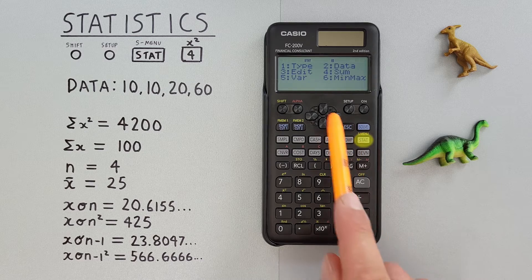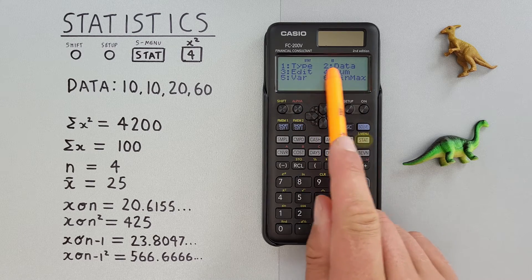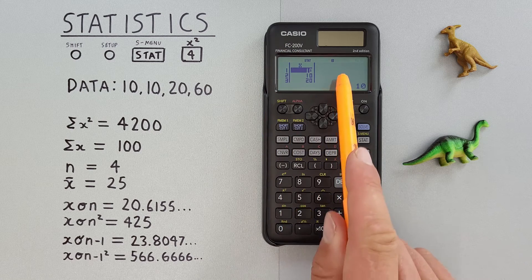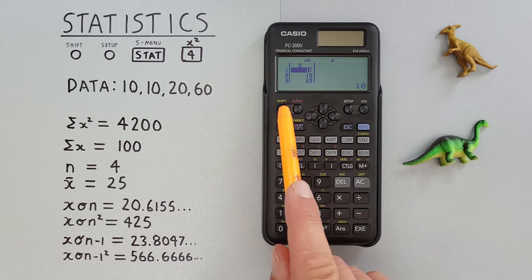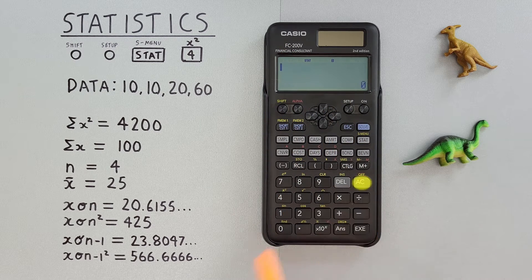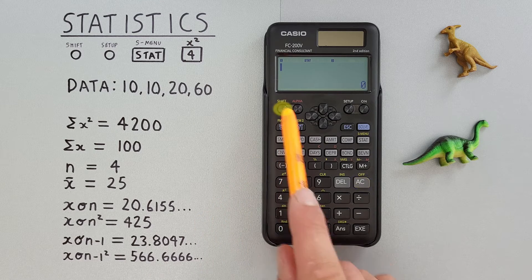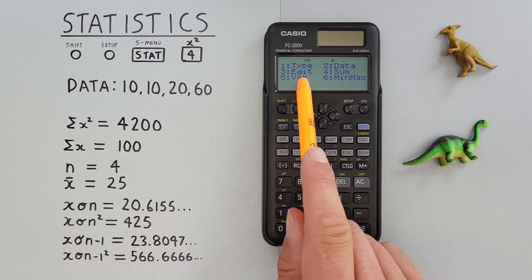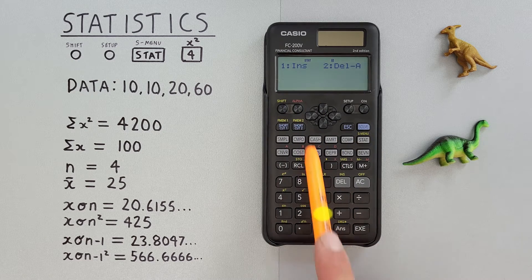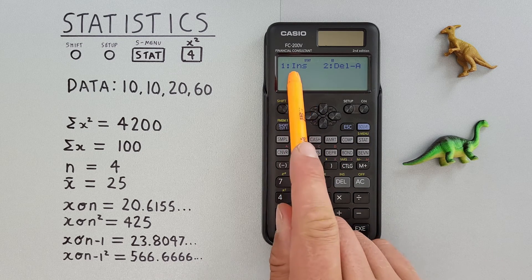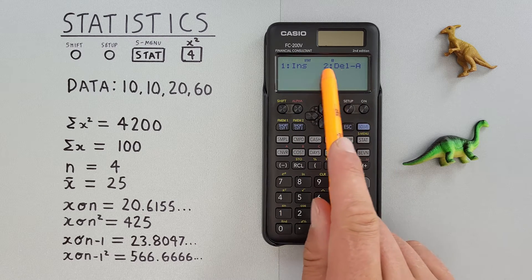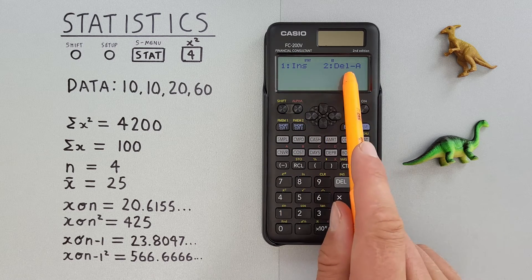If we go back to the STAT menu, number two is data. That just brings us back to our data, in case we want to add to it. Number three is edit, if we want to edit our dataset. So we can either insert something if we need to, or number two, delete all, which will delete our entire dataset.